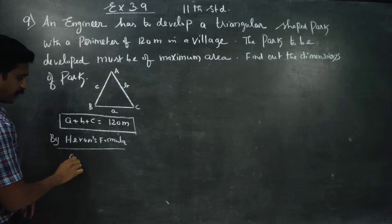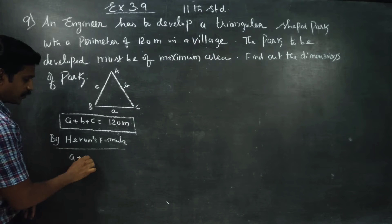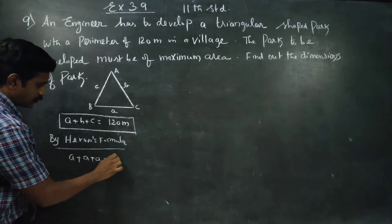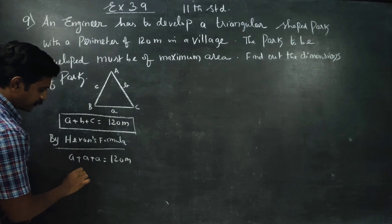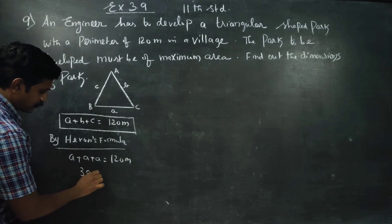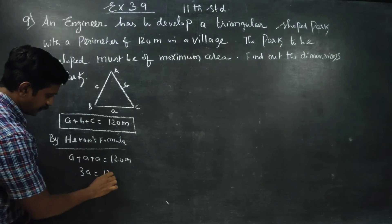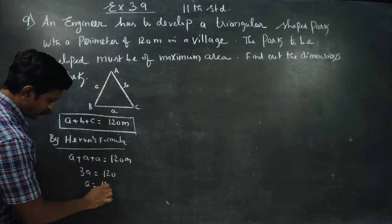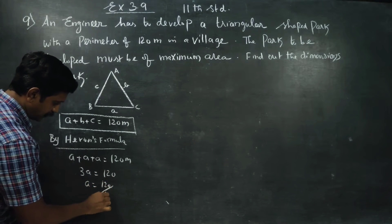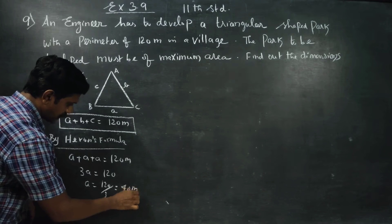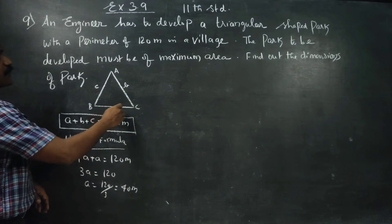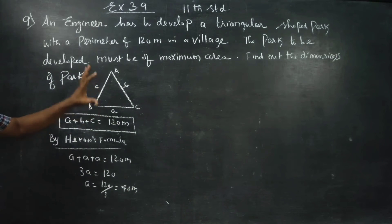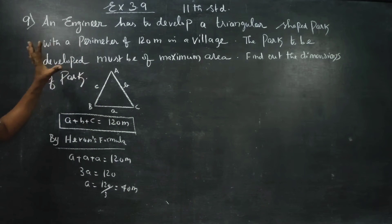For an equilateral triangle, all sides are equal: a plus b plus c is equal to 120 meters. So 3a is equal to 120, a is equal to 120 by 3, a is equal to 40 meters. If it is 40, 40, 40, then you will be getting the maximum area.